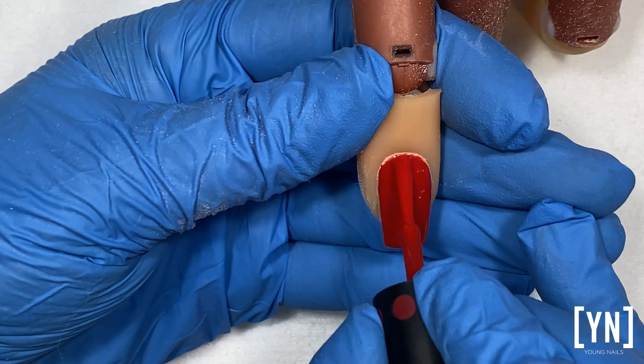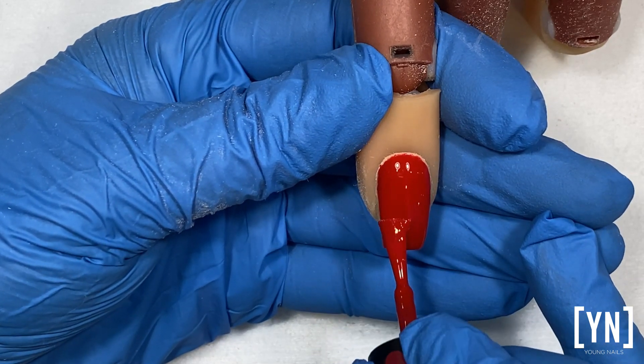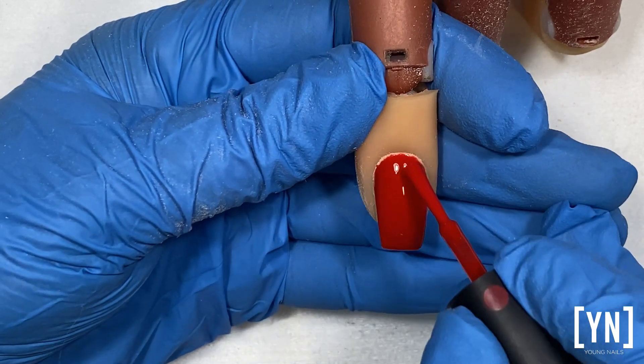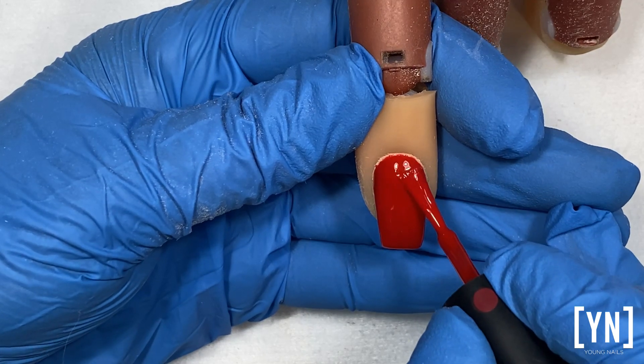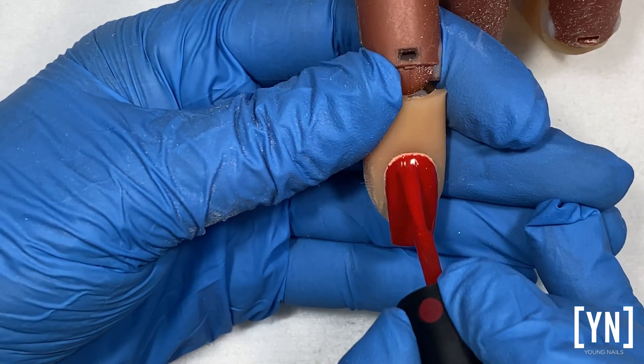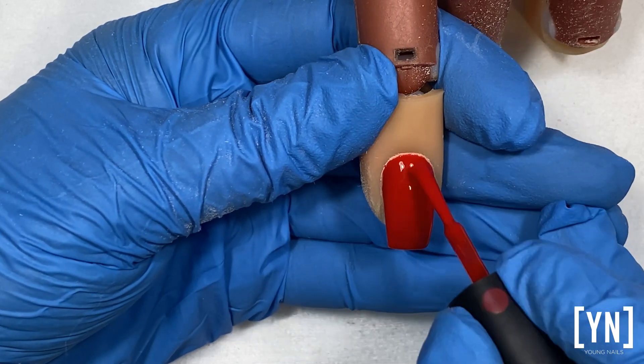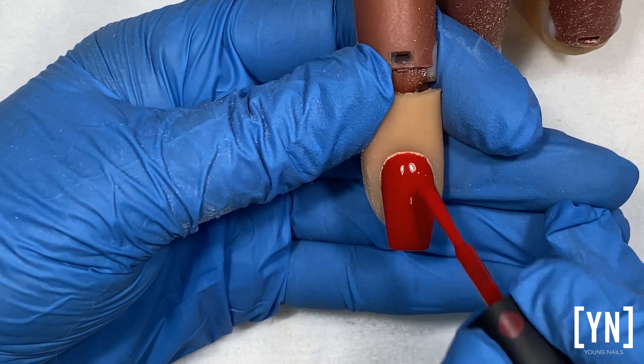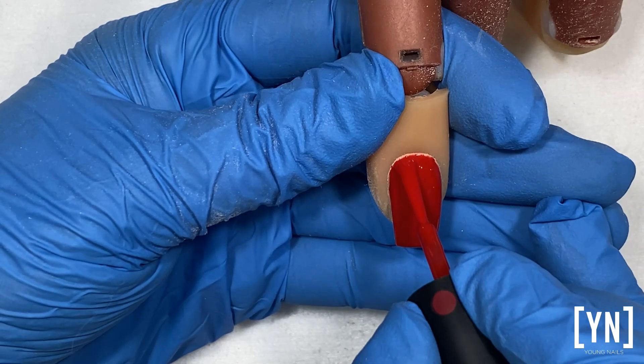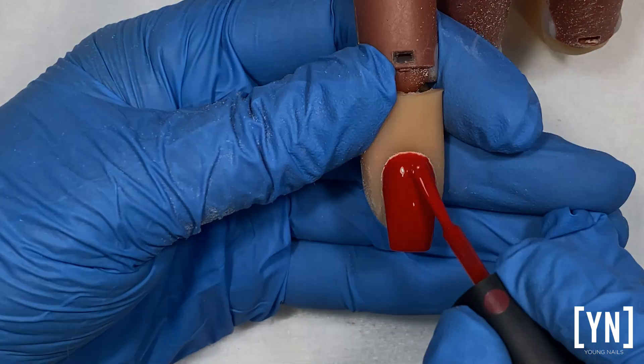As I said to you, this is a soft gel, this is a color concept. Any gel polish is a color concept. It doesn't give you strength, it is just for the color, which you can apply on the natural nail, on top of acrylic, or on top of gel.